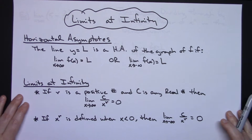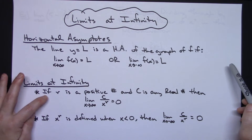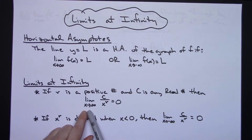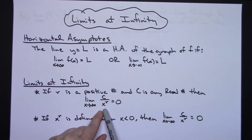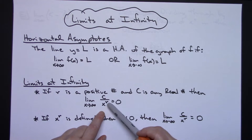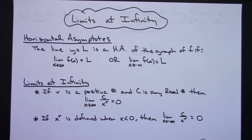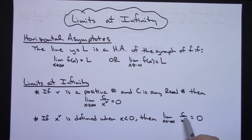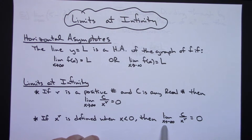For limits at infinity: if r is a positive number and c is any real number, then the limit as x approaches infinity of c over x to the r power is going to go to zero. This is very important — when x is going to infinity and you've got a real number on top, those terms go to zero so we can cross them out. And anytime x to the r is defined for values less than zero, if your limit is approaching negative infinity, then c over x to the r also goes to zero.